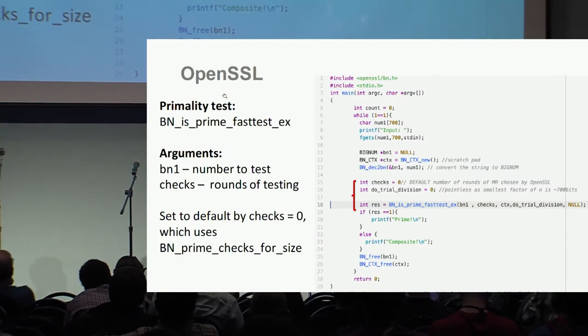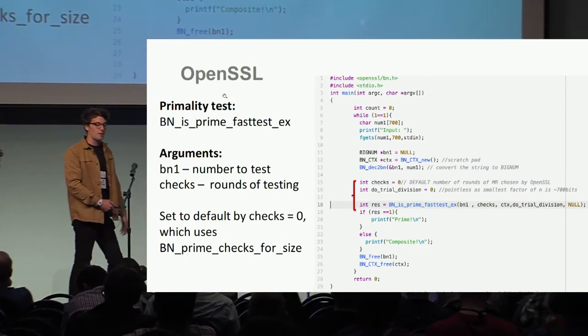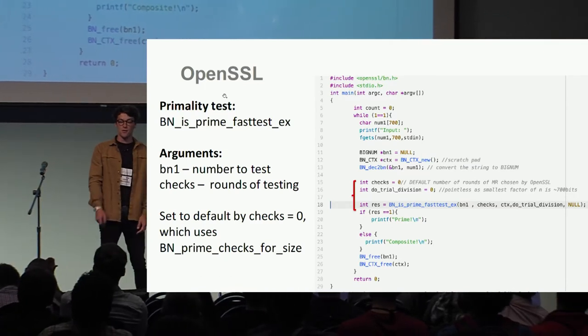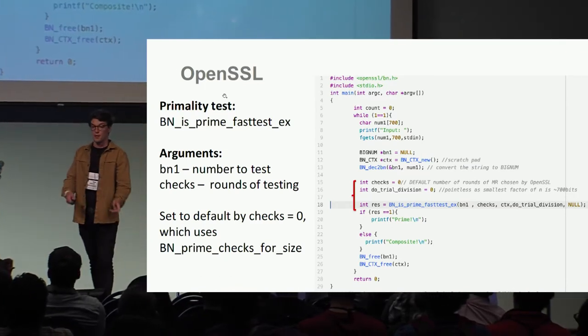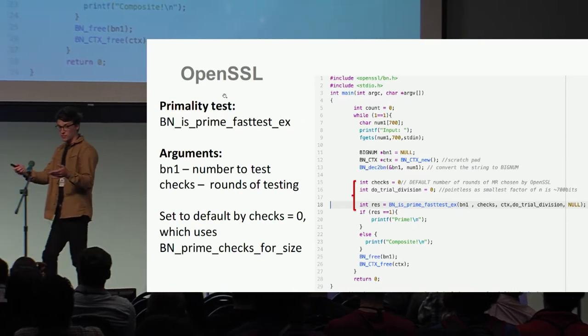Let's look at another example: OpenSSL. Here we're going to be looking at the equivalent primality testing function in OpenSSL, which again takes a number that we want to test the primality of and the amount of rounds of primality testing we want to do.